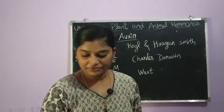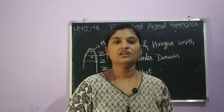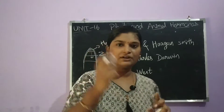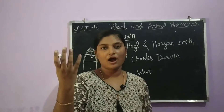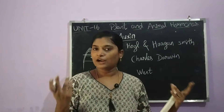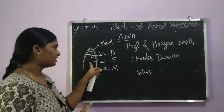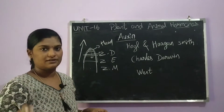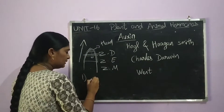To understand auxin, consider a grass plant experiment. In the grass plant, there is a growing tip at the top. In the first step, this tip is cut. When the tip is cut, the plant will not grow further. There is a substance in this tip responsible for plant growth.